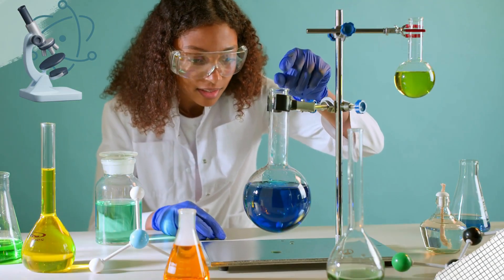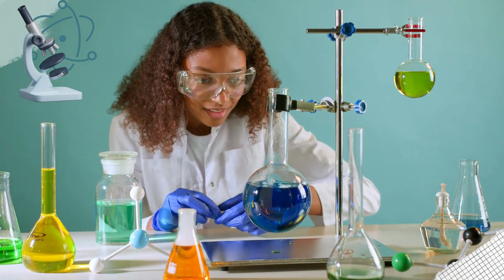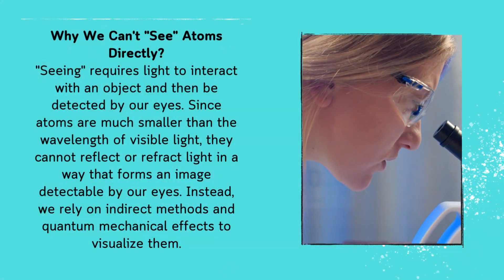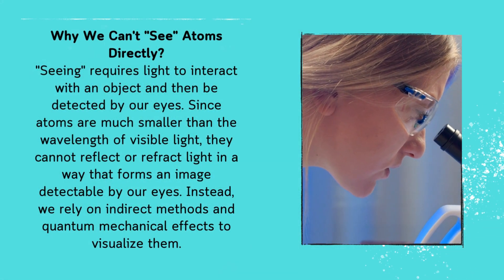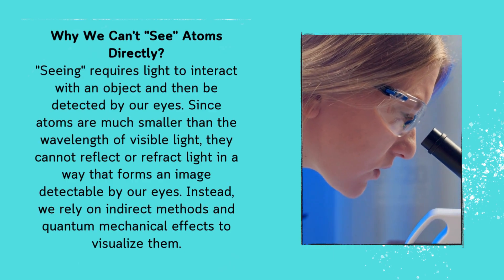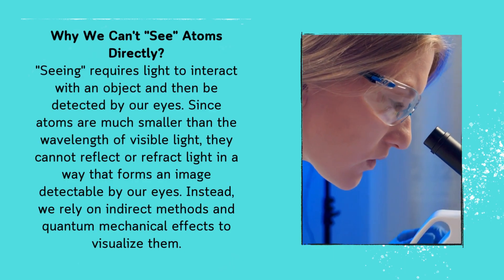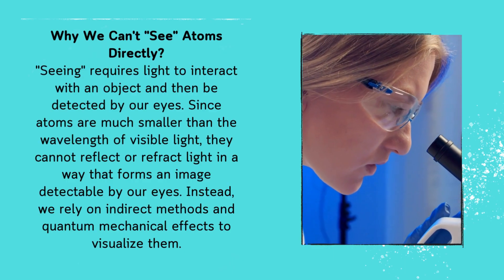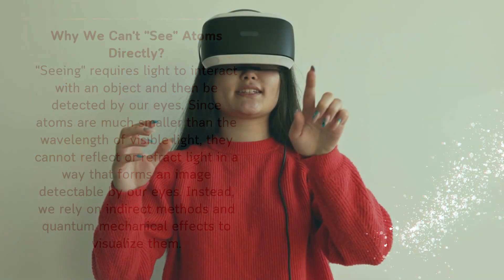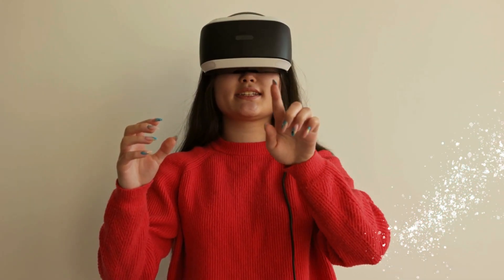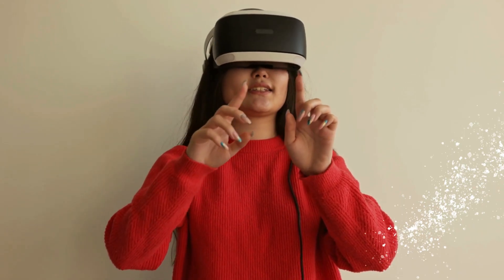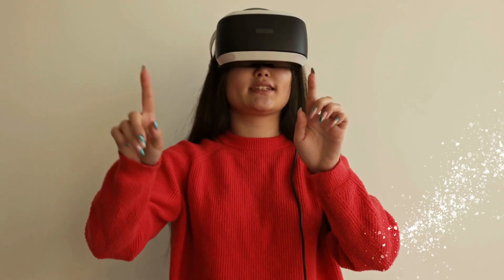What you see in the video is a chemical experiment and not someone trying to see atoms with the naked eye. Why can't we see atoms directly? Seeing requires light to interact with an object and then be detected by our eyes. Since atoms are much smaller than the wavelength of visible light, they cannot reflect or refract light in a way that forms an image detectable by our eyes. Instead, we rely on indirect methods and quantum mechanical effects to visualize them.